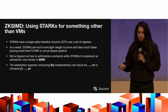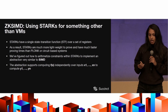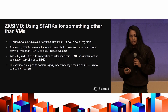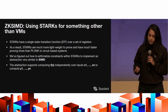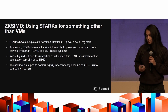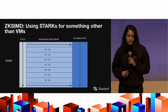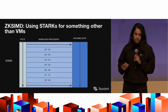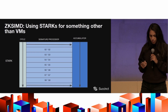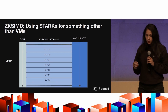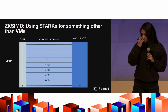We figured out a way to arithmetize constraints within a Stark to implement an abstraction very similar to SIMD. We have a general abstraction that lets us specify a function f to compute independently over a set of inputs and produce a bunch of outputs. In the particular case of signature verification, f is the function of verifying a signature, and x is the actual signature we want to verify. In our Stark verifying signatures in parallel, we have 2^16 rows and 256 signatures getting verified throughout the course of the circuit — not serially, but in parallel.